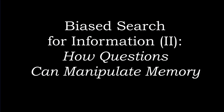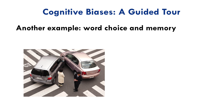We're still talking about biased search for information as a distinct form of confirmation bias. In this video I want to show you how the words used to ask a question can influence not only our likelihood of answering yes or no, but even our memories of events that we're asked about.